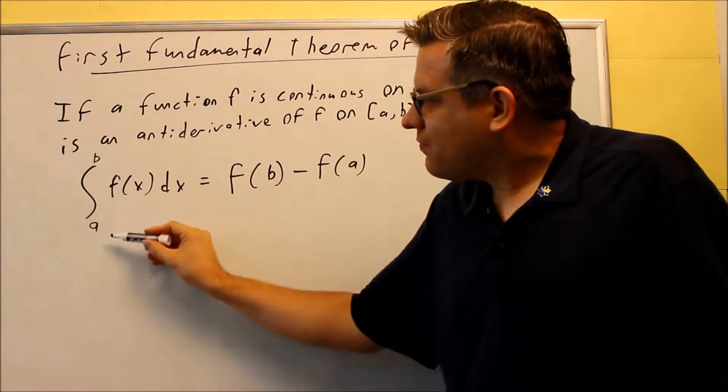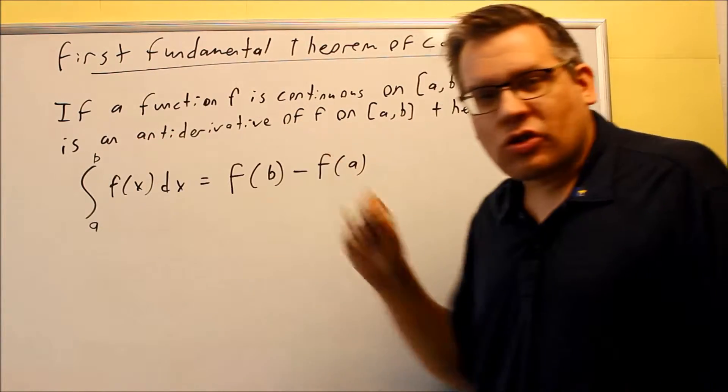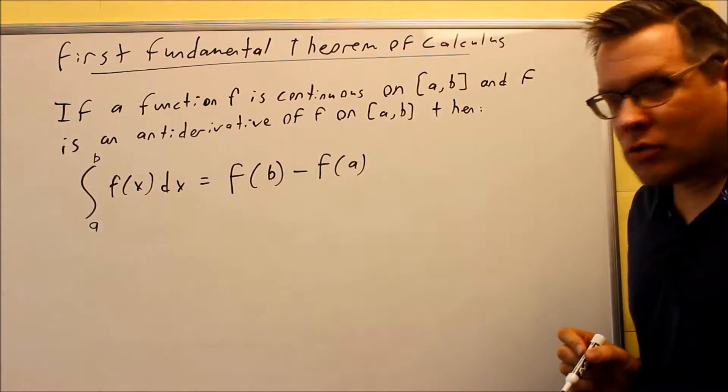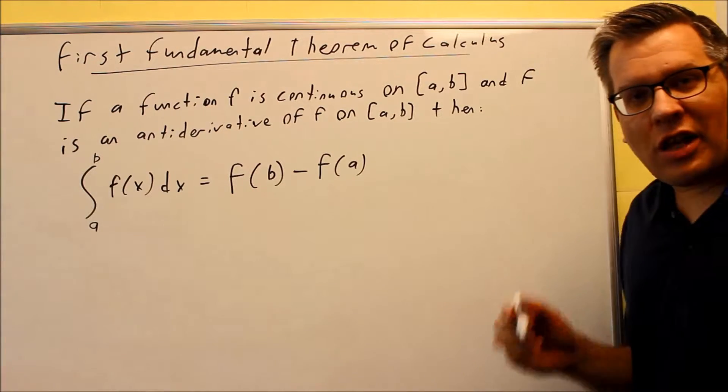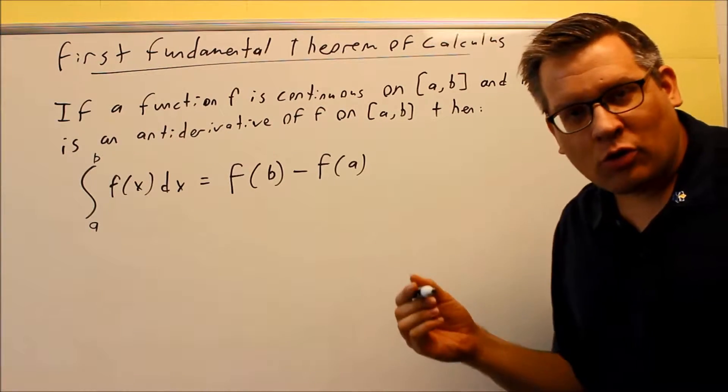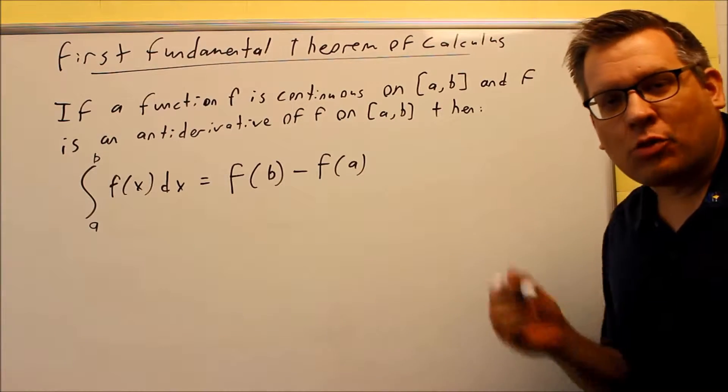These are called limits of integration here, the a and the b. So if I have numbers on the integral symbol, then this is what you're going to do. You're going to take the antiderivative. We've already talked about how to do that by using the inverse power rule in a previous session.